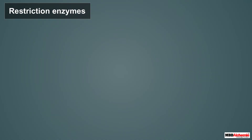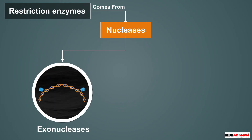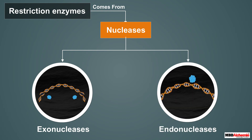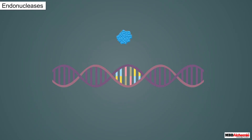Let us come to the functioning of these enzymes. Restriction enzymes belong to a class of enzymes called nucleases — enzymes that cleave nucleic acids. These are of two types: exonucleases, which remove nucleotides from the ends of the DNA, and endonucleases, which make cuts at specific positions within the DNA. Here, we will focus on the endonucleases.